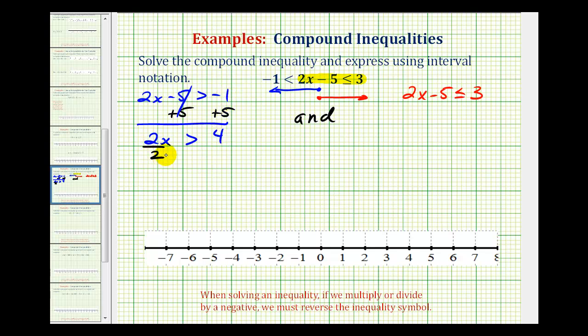Divide both sides by a positive 2. Now we're dividing by a positive, so we're not going to reverse the inequality. That's only when we divide or multiply by a negative. So this would be x greater than positive 2.